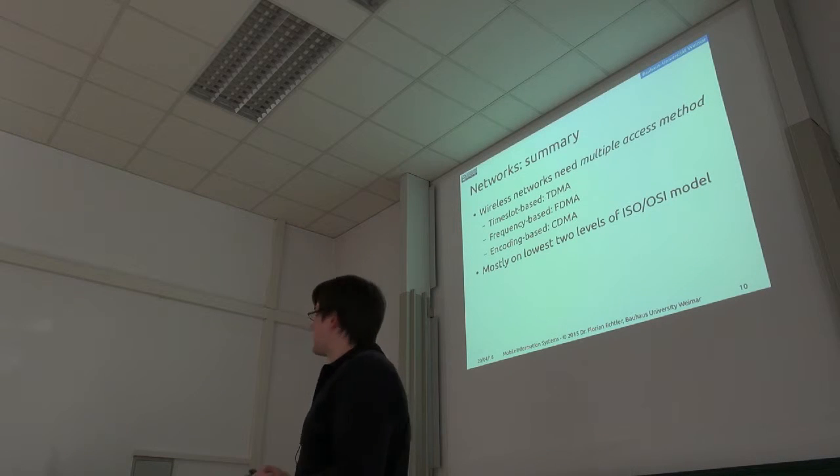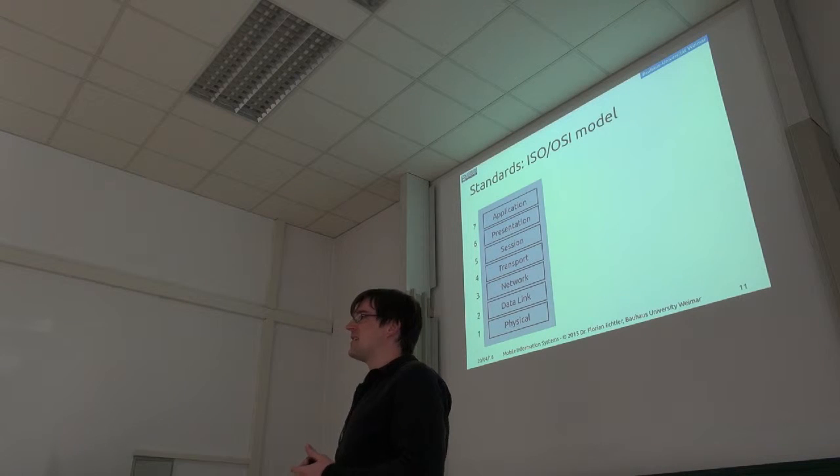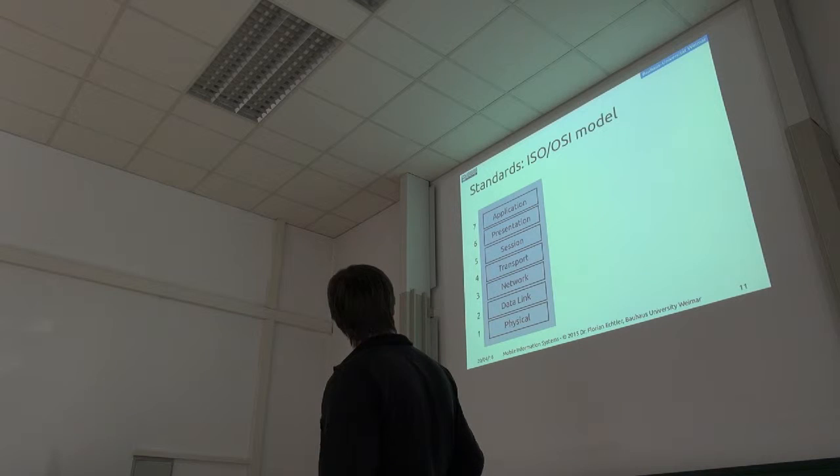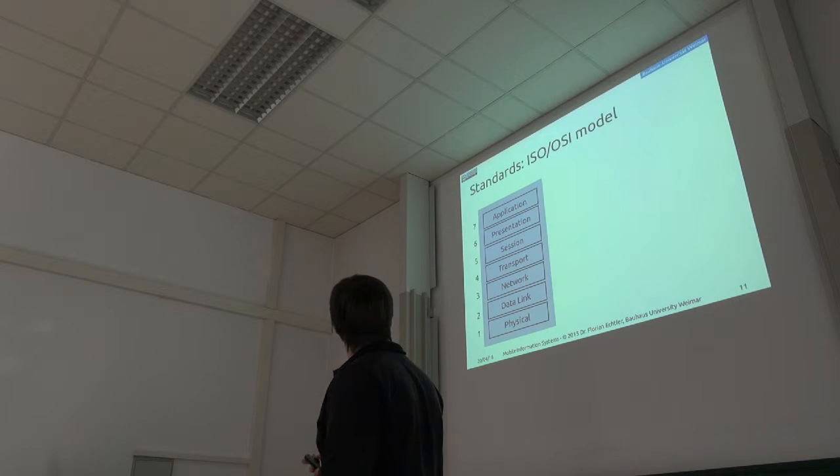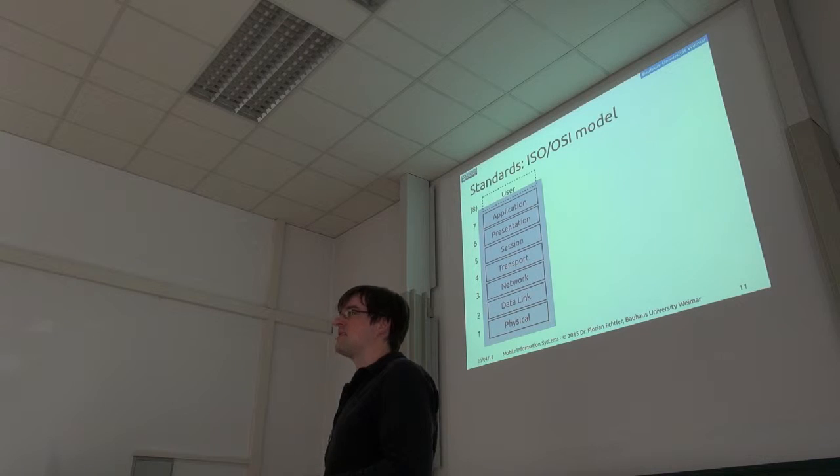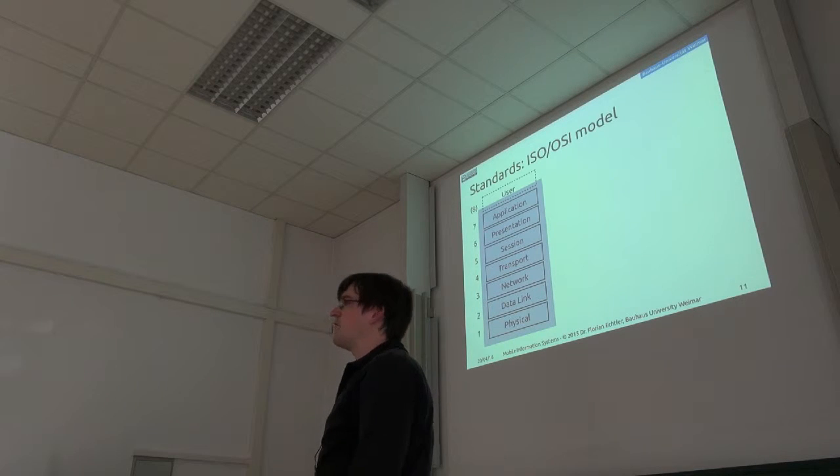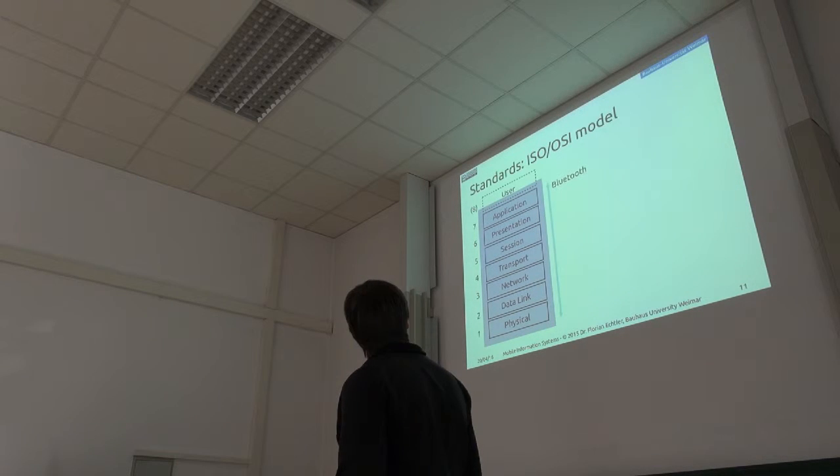Alright, so let's continue. Now I'd like to look into different standards, a few examples of what we actually use every day and how they fit into this model. First of all, a side note: this layer usually has seven layers, this model, and sometimes if people talk about layer eight, then this is supposed to mean the user which is on top of the rest. That's not actually part of the official model, but if you ever hear that mentioned, then layer eight actually refers to the user.